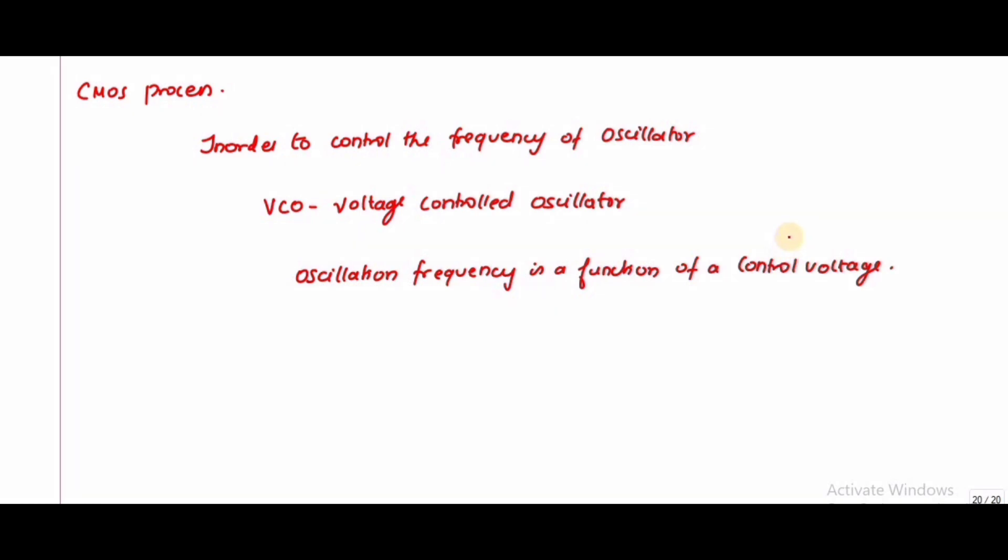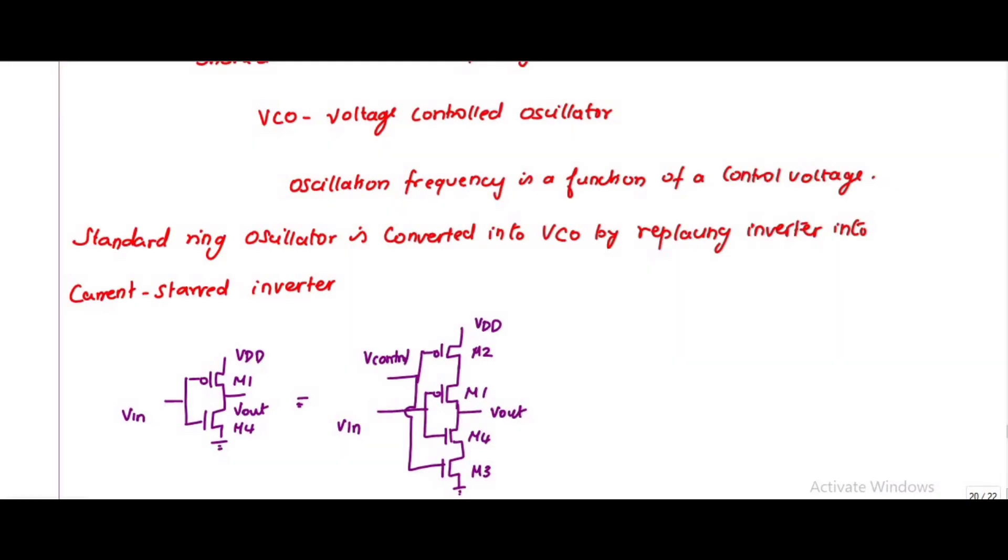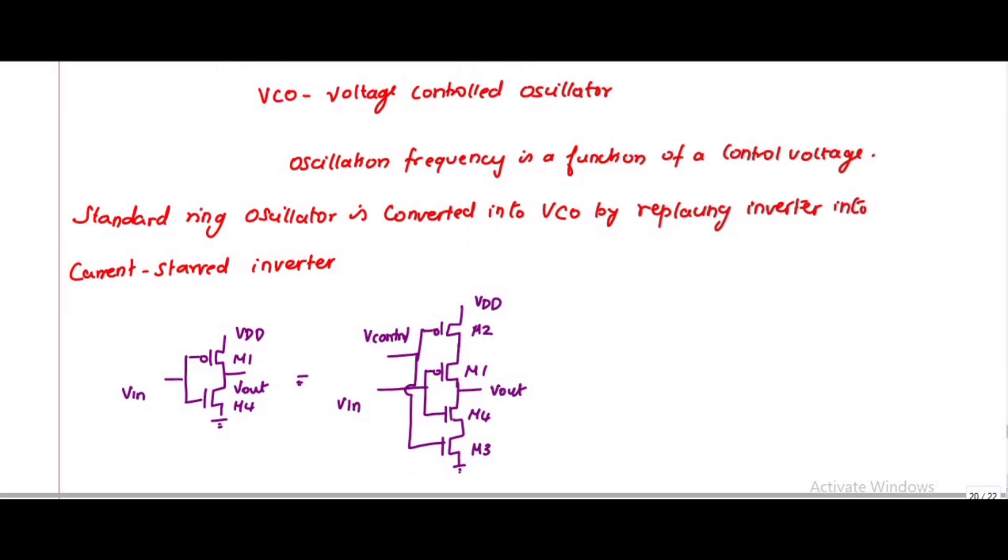In order to control the frequency of the oscillator, we can see the example of VCO, because one of the applications is the voltage-controlled oscillator. Here the oscillation frequency is a function of control voltage. The standard ring oscillator is converted into a VCO by replacing the inverter with a current-starved inverter. This is the structure of the inverter replaced by adding M2 and M3 transistors in series with PMOS and NMOS.